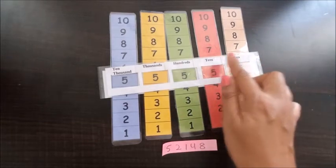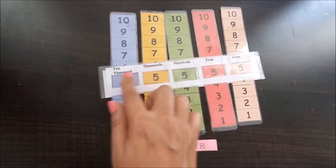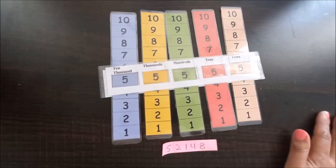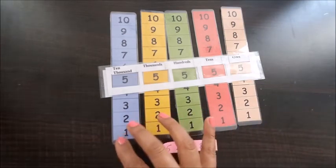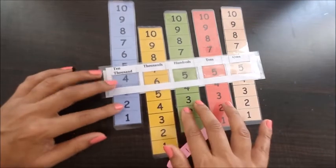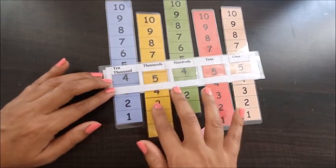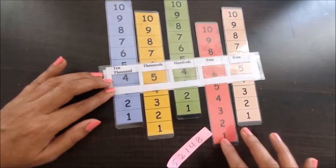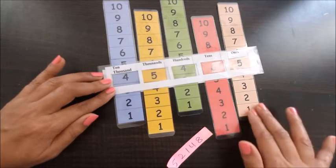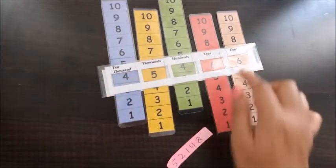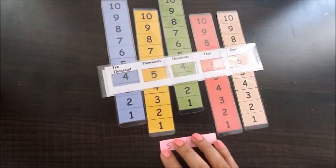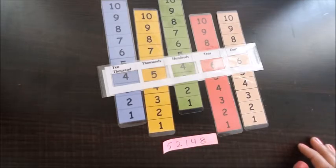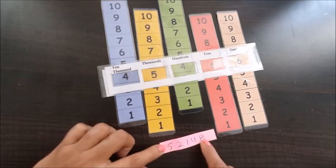Ones, tens, hundreds, thousands, ten thousands. So there are two ways to go ahead with this. Either first we will go ahead and adjust some value here by moving the strips up and down, and the child will write the value here. So that's one technique.